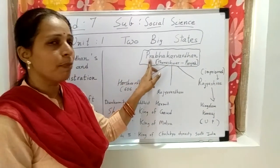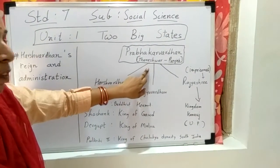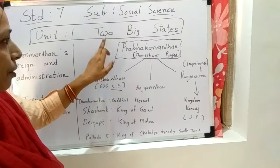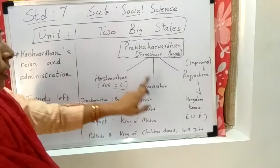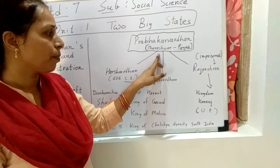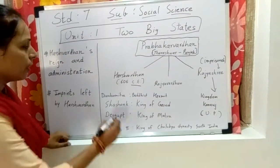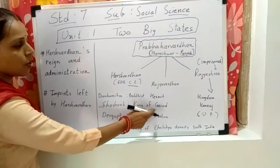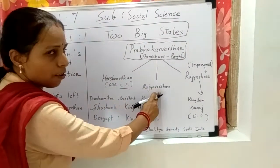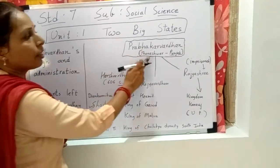After the death of Prabhakarvardhan, who was the king of Thaneshwar — presently Punjab — Rajivardhan ascended the throne of Thaneshwar. But after some time, Rajivardhan was killed by Shashank, king of Gaur. After the death of Rajivardhan, Harshvardhan became the king of Thaneshwar.